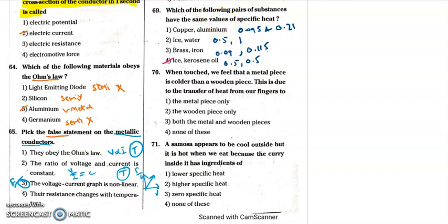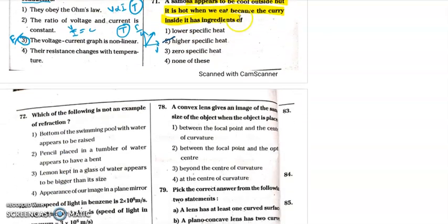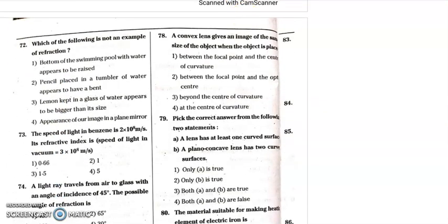When we touch a metal piece, it feels colder than a wooden piece. This is due to transfer of heat. When we run, both mediums transfer heat differently.